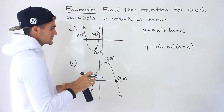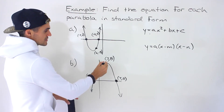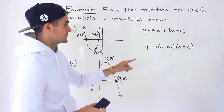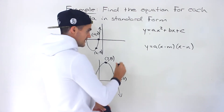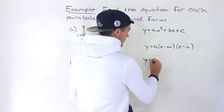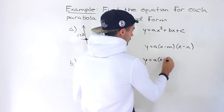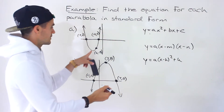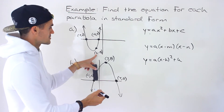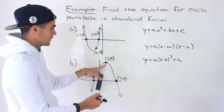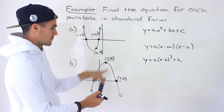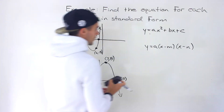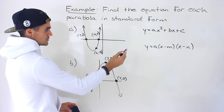For part b, there are going to be two ways to do it, because the point we're given is actually the vertex. So we can also put this initially in vertex form. For part a, we can't do that because we're not given the vertex — that point is not the vertex. But in part b, we are given the vertex, so I'll do it in two ways. For part a, we can only use the factored form approach.